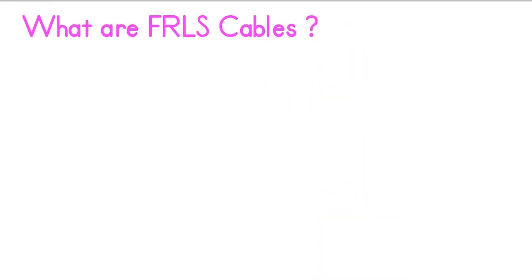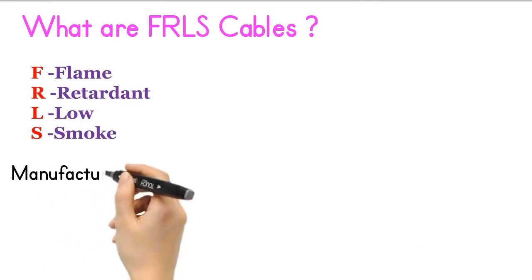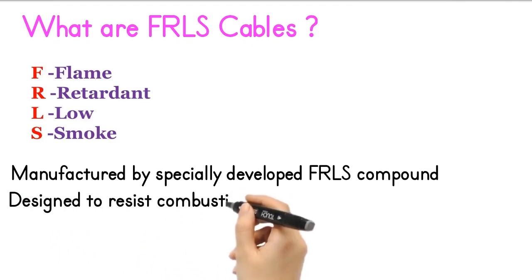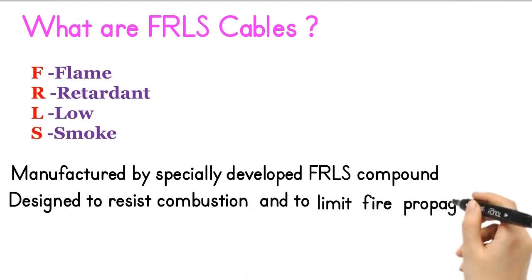What are FRLS cables? FRLS cables stand for flame retardant low smoke cables. These cables are manufactured using specially developed FRLS compound for cable sheathing. FRLS cables are designed to resist combustion and to limit fire propagation. These FRLS compound cable sheathings are resistant to ignition and flame propagation.